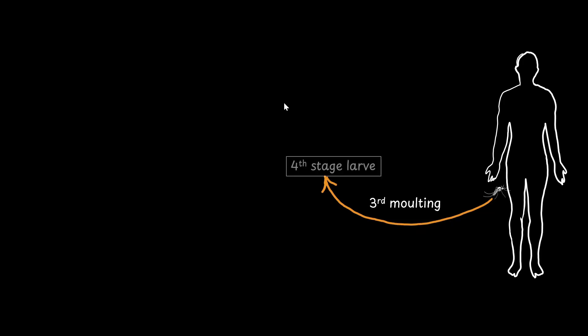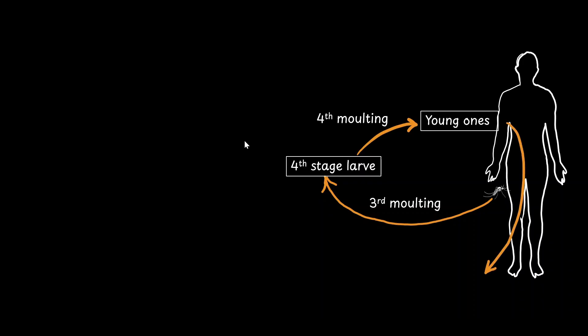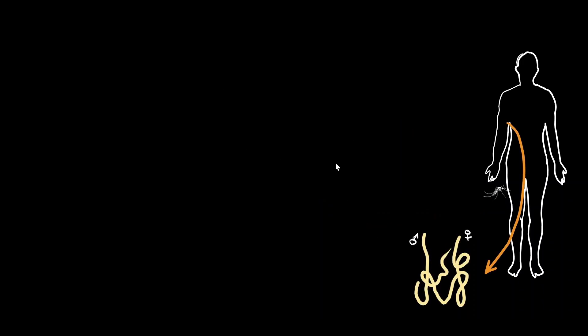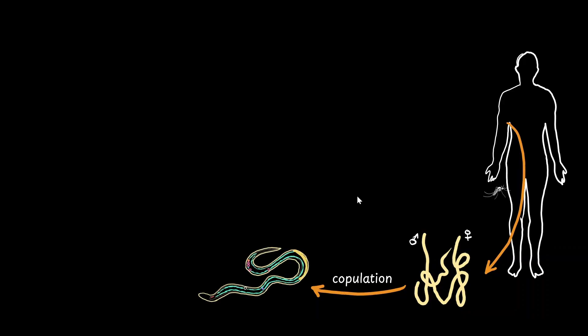The infection starts with a mosquito containing the Wuchereria larva biting the human. The third-stage larva enters the bloodstream and reaches the lymphatic vessels. It undergoes third molting to become the fourth-stage larva and fourth molting to become a young worm. These young ones attain sexual maturity and become male and female. The male and female worms are tightly coiled in the lymphatic vessels and are very difficult to separate. They undergo copulation and the female releases sheathed microfilariae that exhibit nocturnal periodicity.